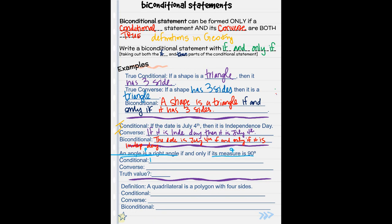So if an angle is a right angle, then its measure is 90 degrees. And I'm going to abbreviate because I ran out of room. Conditional statement. We are just switching them. If an angle's measure is 90 degrees, then it is a right angle.